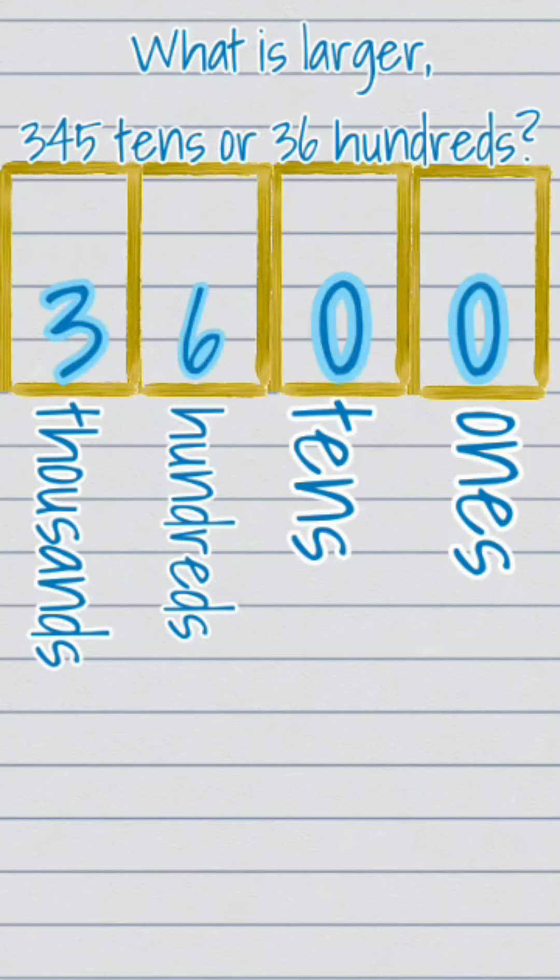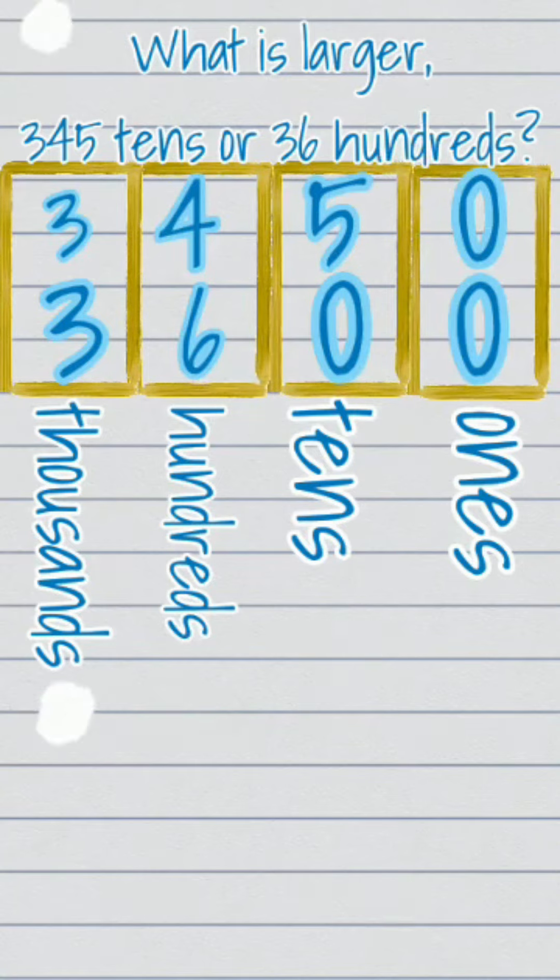If you said 36 hundreds is larger than 345 tens, you are correct. You used the same strategy.